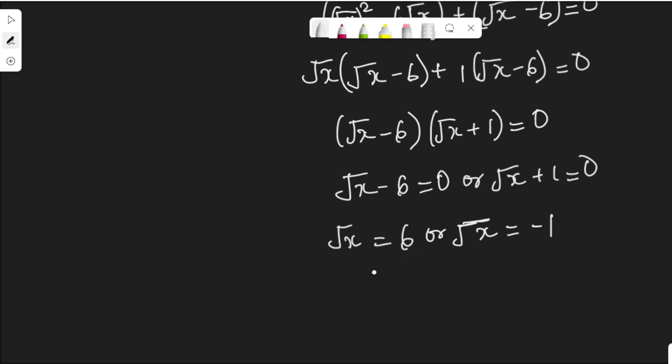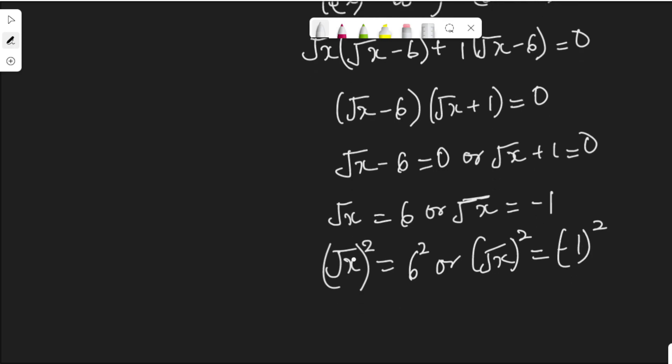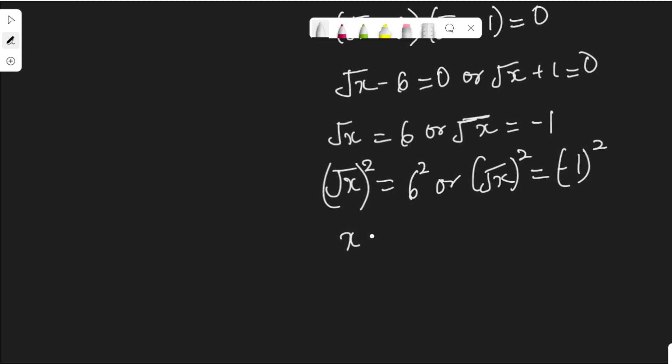Now how do you get the value of s from here? We need to square both sides to clear the square root sign. Root s square and whatever I do, I will do it at root 6 square, or root s square equal to negative 1 square. Root s square would be s. s equal to 6 square is 36, or s equal to negative 1.